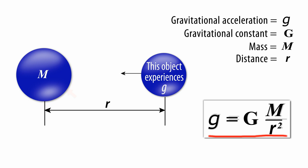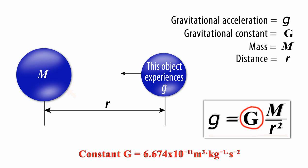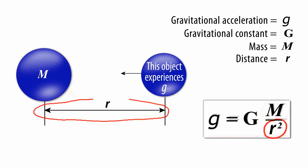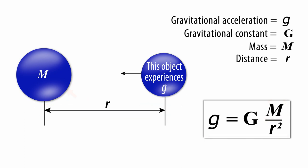Let's read this equation. Big G is a universal constant that is the same everywhere. M is the mass producing the gravitational attraction. R is the distance between that mass and the object experiencing the acceleration small g. This equation gives us two reasons why small g varies ever so slightly from place to place on the surface of the Earth.